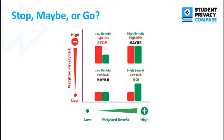This is our chart of whether you should probably stop, maybe move forward, or move forward for sure. If you have low benefit and high risk, why would you move forward? Whereas if you have low benefit and low risk, maybe you move forward. If you have high benefit but also high risk, that's probably one you want to get an administrator involved. But if you have high benefit and low risk, it's something where you might want to move forward.